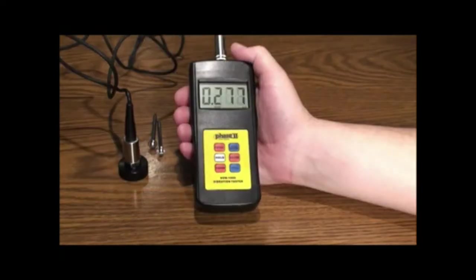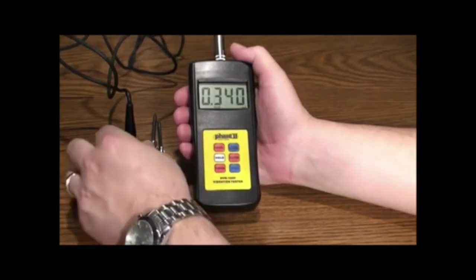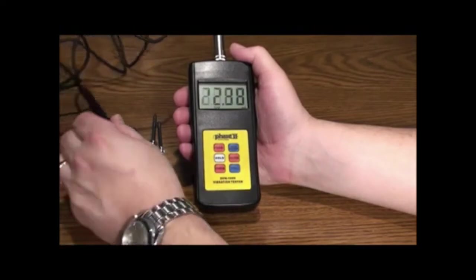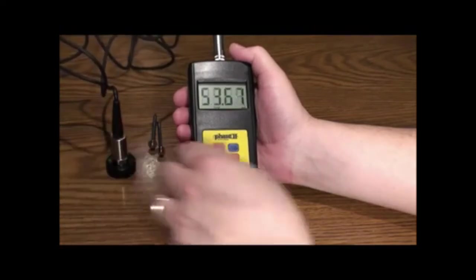To take a reading, place the accelerometer firmly on the surface of the part being checked. You will notice the reading shown on the screen.